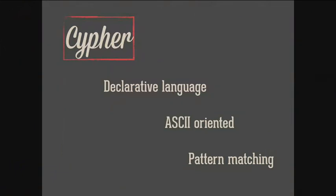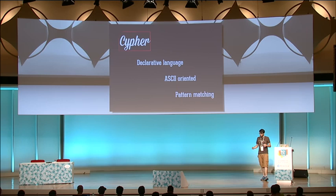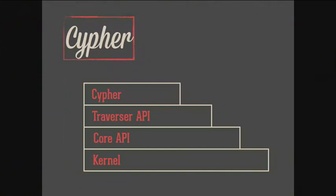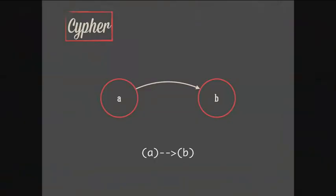Now let me introduce Cypher. Cypher is a declarative language. It's ASCII-oriented, so we translate what we are representing into ASCII drawings. We look for patterns. The simplest thing we can represent in Cypher is a node related to another. A is related to B — on the top we see a drawing and below we have the Cypher representation. The translation is very straightforward.